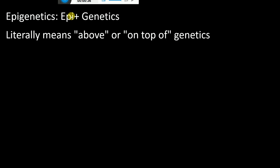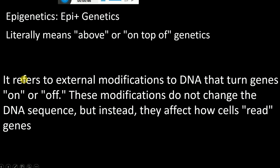The definition of epigenetics is that it refers to external modifications to DNA that turn genes on or off. These modifications do not change the DNA sequence, but they affect how cells read the genes. Because of epigenetics, some genes are turned on and some are turned off — this is how gene regulation is affected.